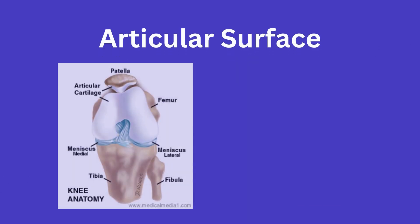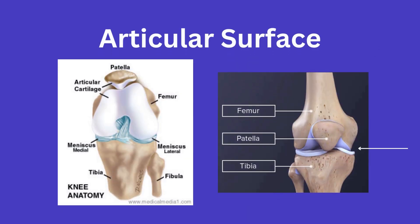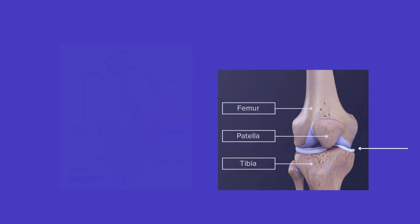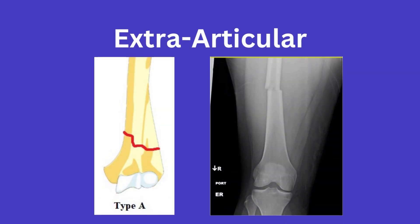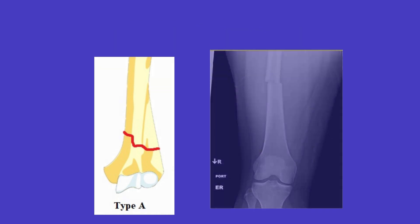So to start, the articular surface here in the image is the surface of the bone that forms the joint. An extraarticular fracture thus is one that does not involve this articular surface at all. You can see here that this mid shaft femur fracture would be one that is extraarticular, or a type A fracture.